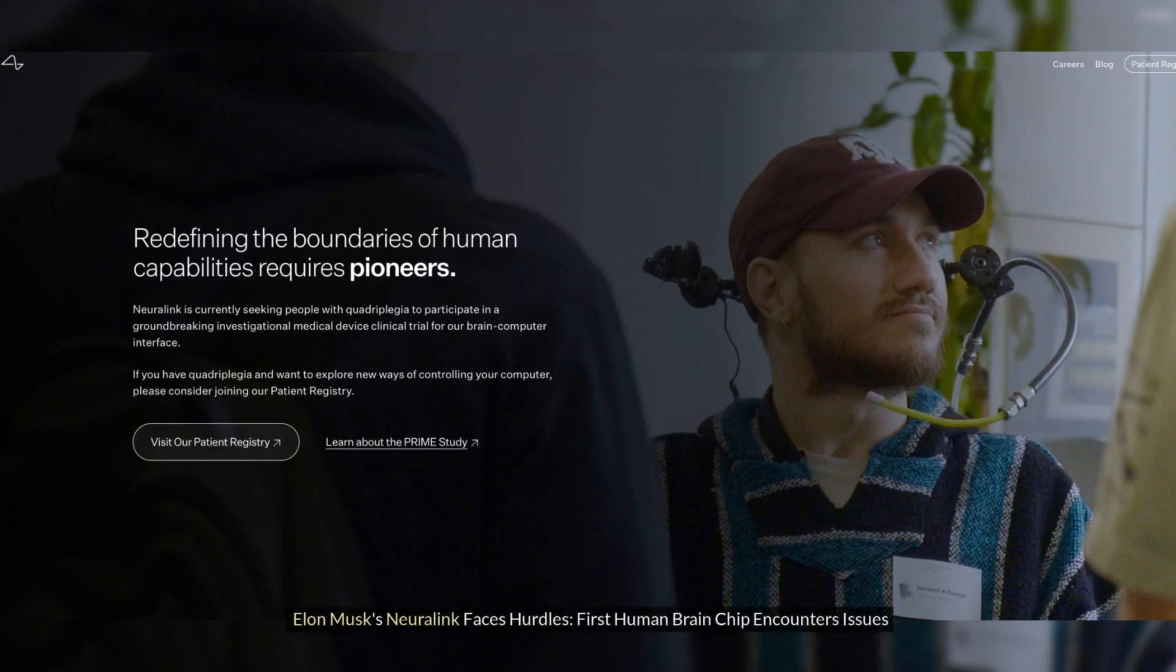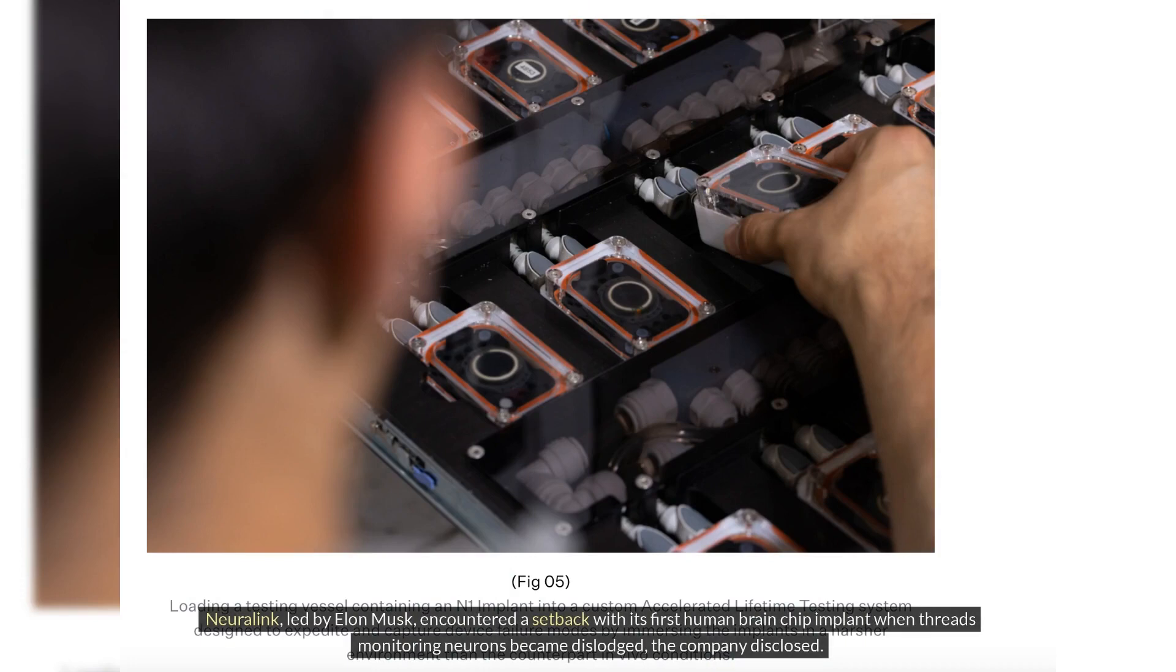Elon Musk's Neuralink faces hurdles, first human brain chip encounters issues. Neuralink, led by Elon Musk, encountered a setback with its first human brain chip implant when threads monitoring neurons became dislodged, the company disclosed.